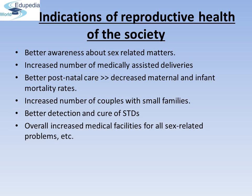Indications of reproductive health of the society: better awareness about sex-related matters, increased number of medically assisted deliveries, and better postnatal care leading to decreased maternal and infant mortality rates. Increased number of couples with small families, better detection and cure of STDs, and overall increased medical facilities for various sex-related problems, etc., are indications of improved reproductive health of the society.